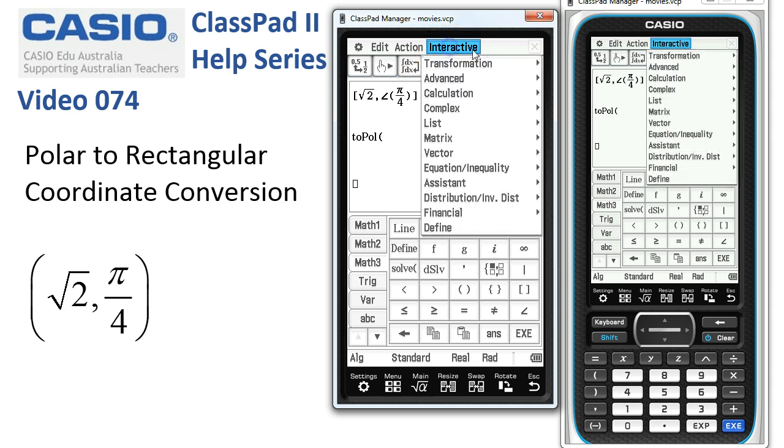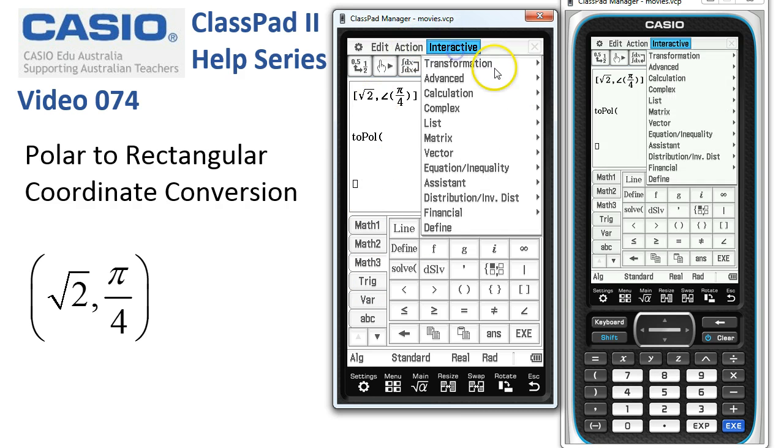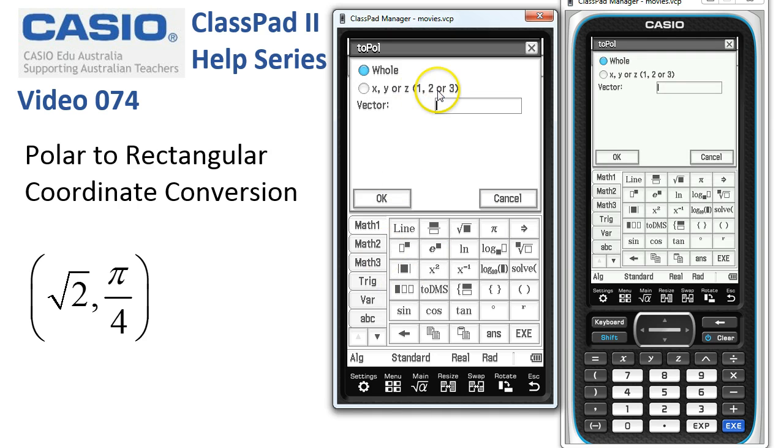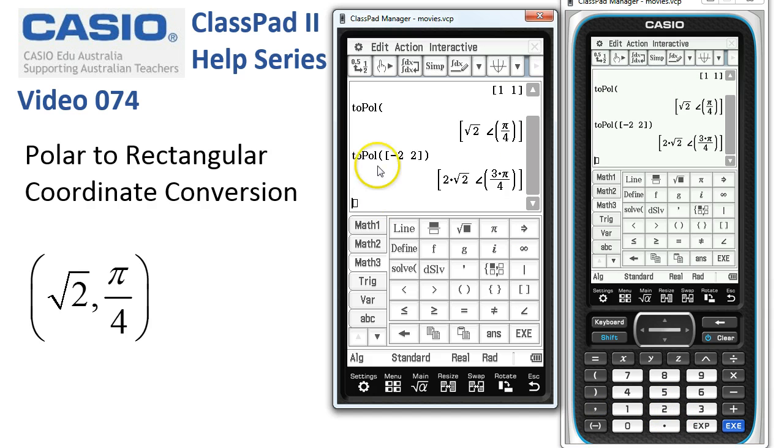There's also the interactive version of this to polar where, of course, I wasn't on a line, I'll put the cursor back on a line, interactive vector to polar form. And when we use this, we've got to head down to Math3, put in our square brackets, and say we want to convert the point negative 2, 2 in rectangular form. Then there's our rectangular coordinates, we're going to polar form, and there it is back in polar form.